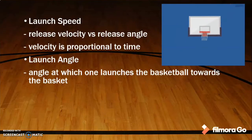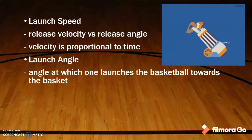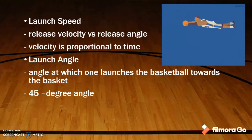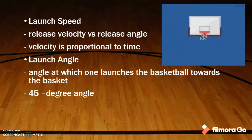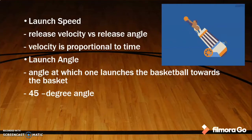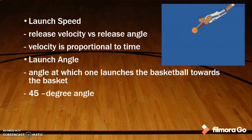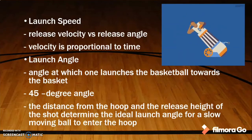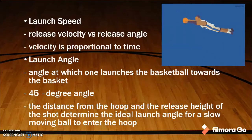Launch angle is simply the angle at which one launches the basketball towards the basket. A 45-degree angle is halfway between two extremes: having the arm straight out and parallel to the floor is a 0-degree angle, and having the arm pointing straight up to the ceiling is a 90-degree angle. The distance from the hoop and the release height of the shot determines the ideal launch angle for a slow-moving ball to enter the hoop.